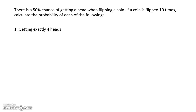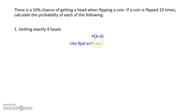For the first problem, we're going to calculate the probability of getting exactly 4 heads. The first thing we want to do is write this problem using probability notation. So we're trying to calculate the probability that x is equal to 4, so that we've got exactly 4 heads. Because there is an equal sign in what we're trying to find, we're able to use BPD on our graphics calculator using x equal to 4, n equal to 10, and a probability of success of 0.5.